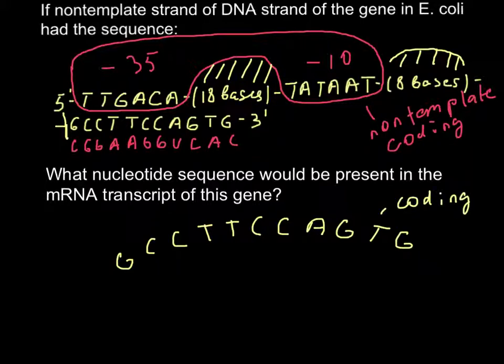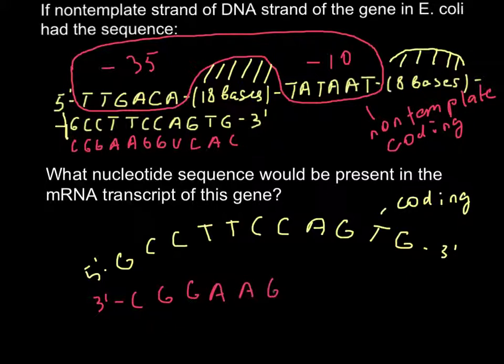Coding template and our non-coding or template sequence is going to be complementary to this sequence. So here we have our five prime end and three prime end. So our template sequence is going to be three prime end here and G pairs with C, G, G, thymine with adenine. So A, A, G, G, T, C, A, and C here. So this is going to be five prime end here.